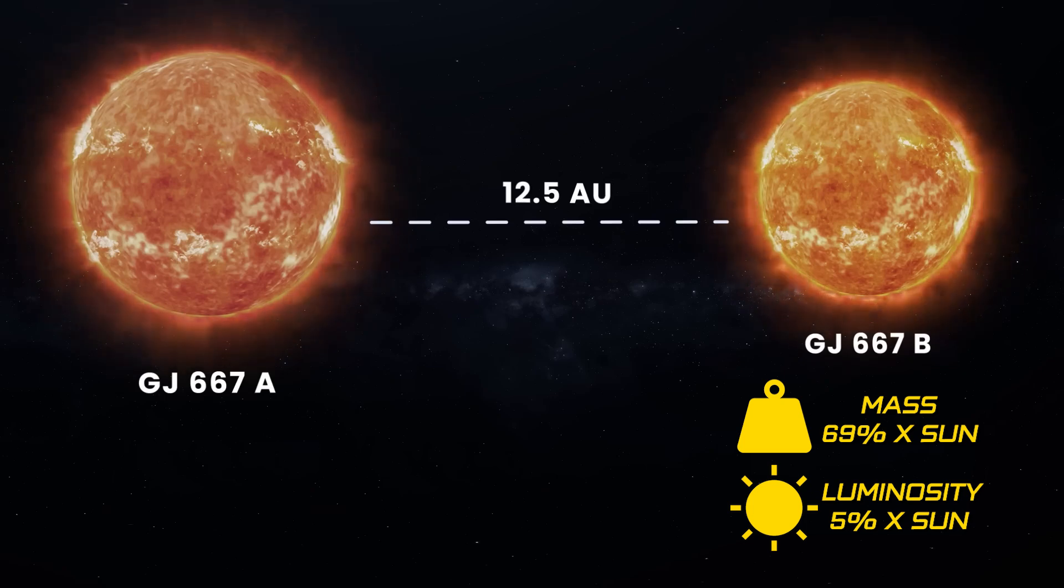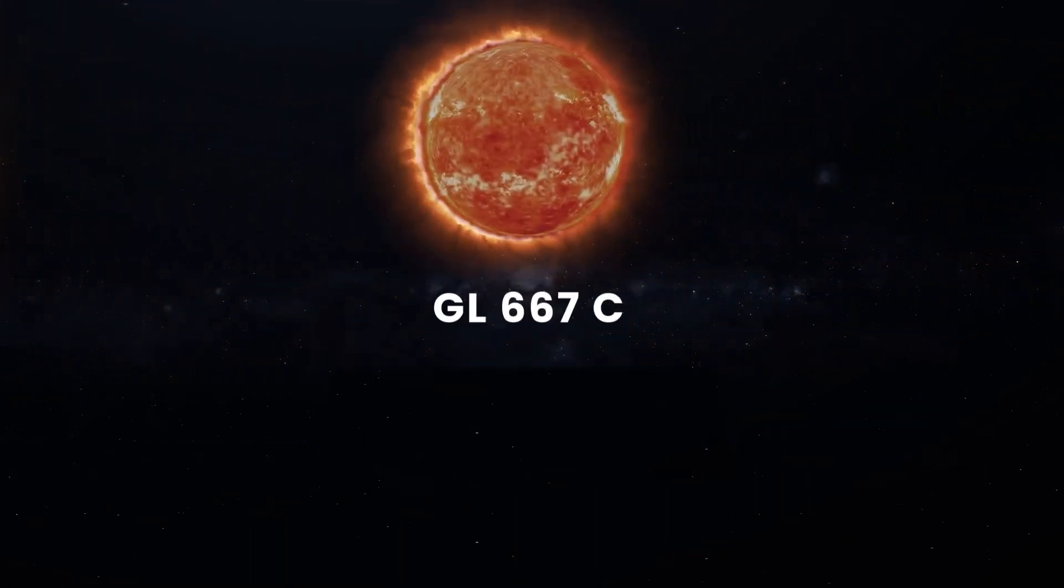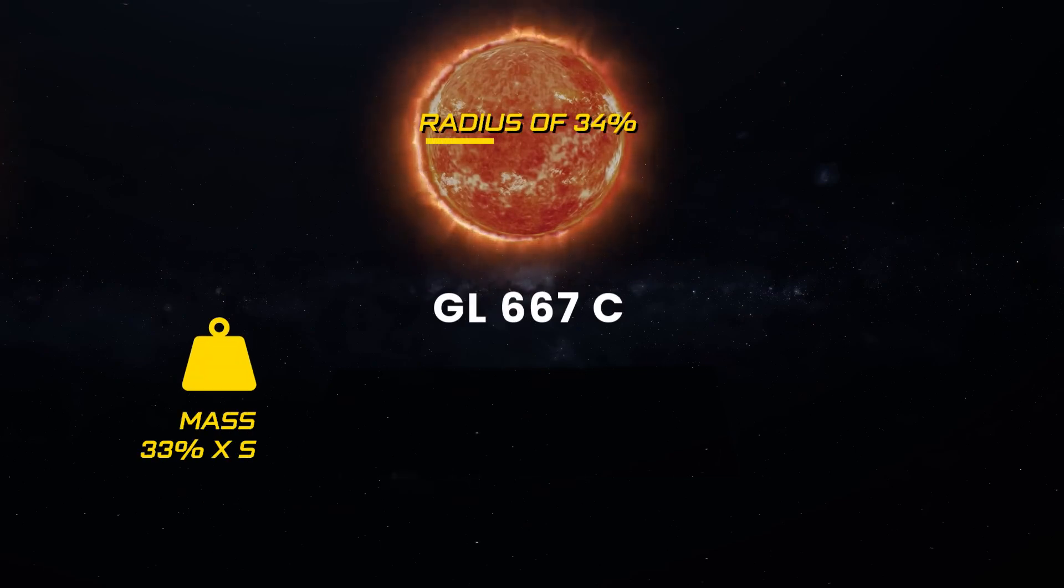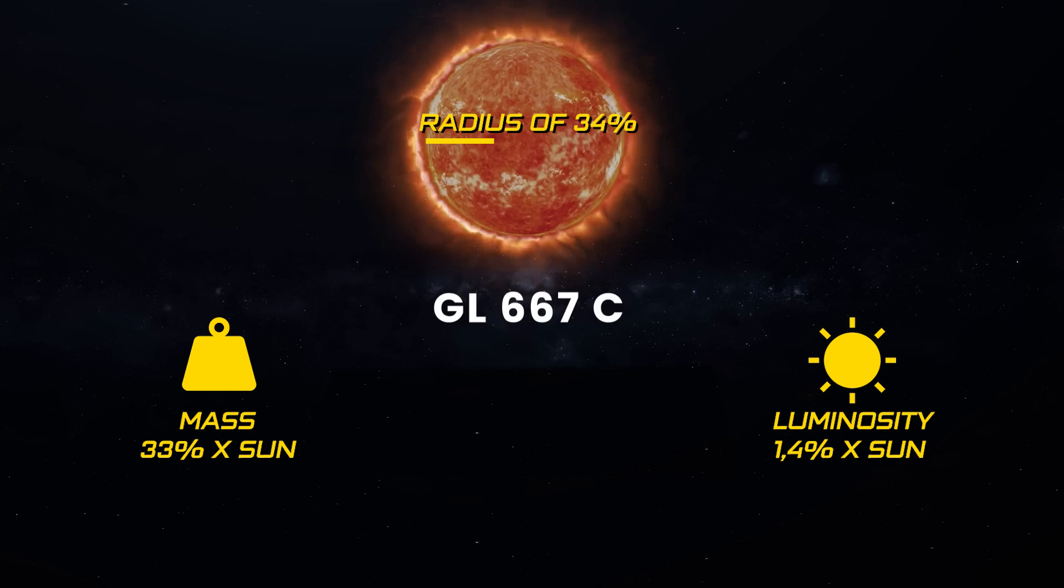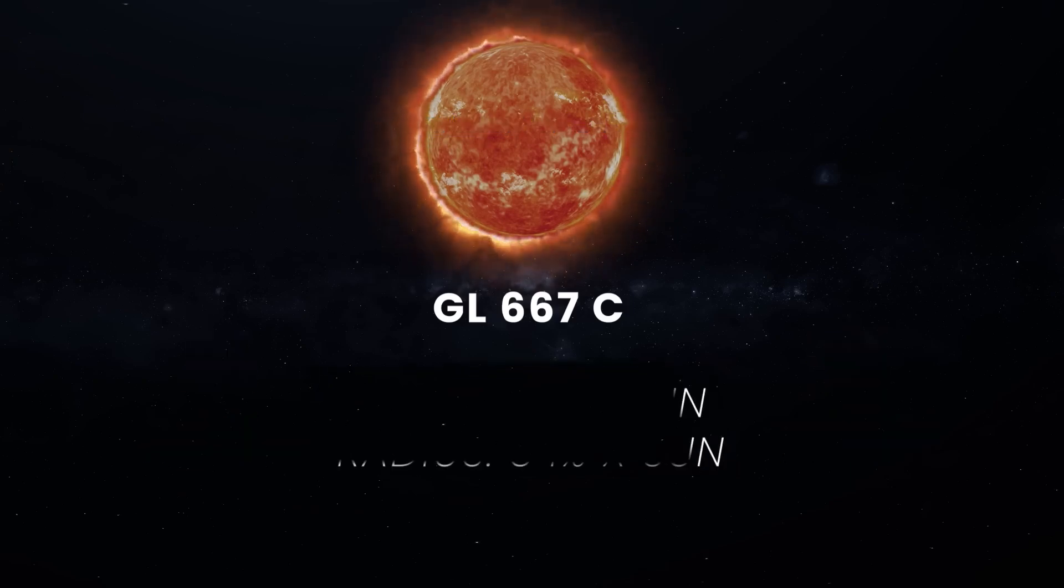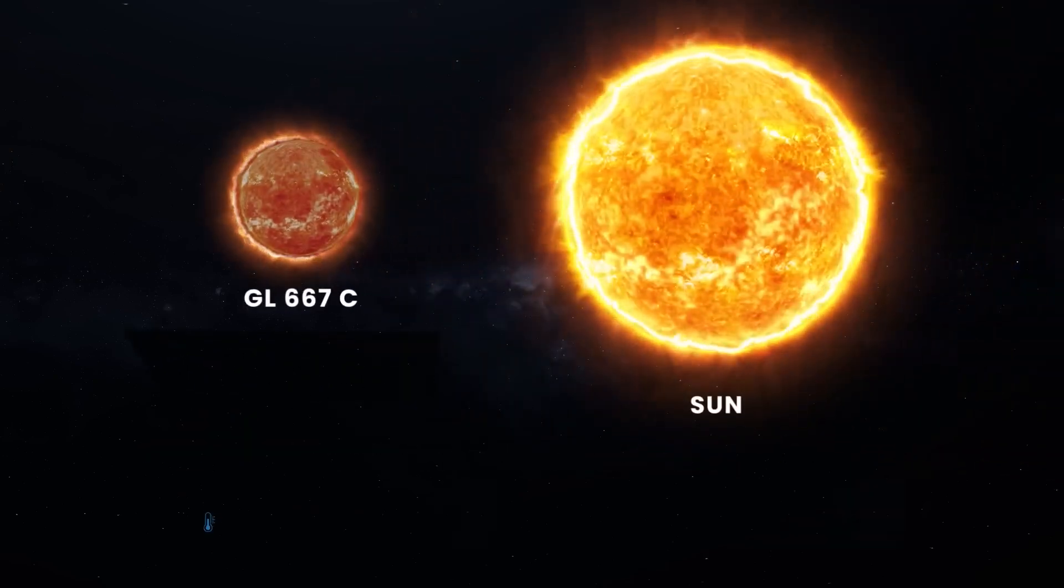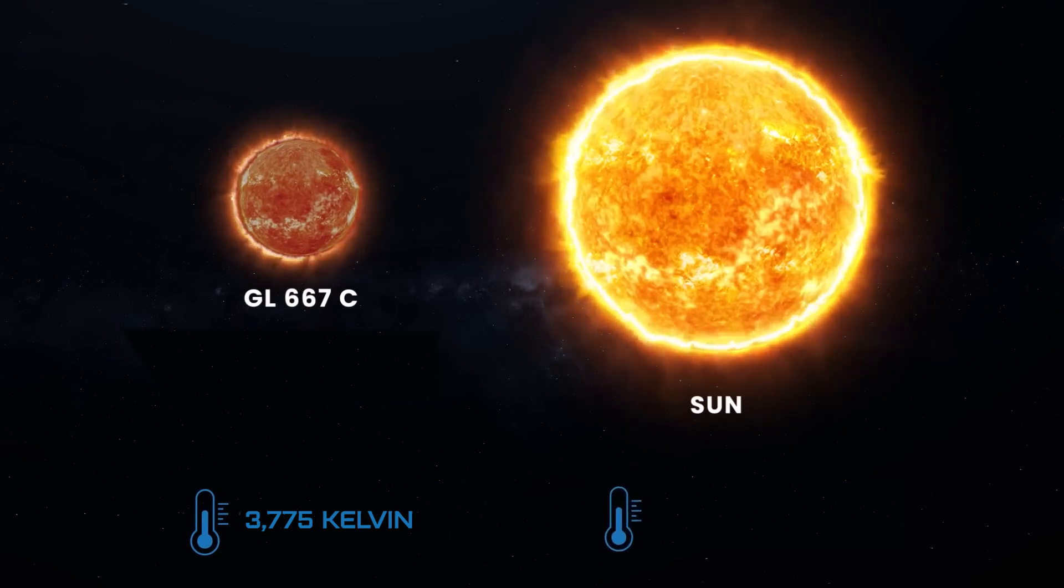Now, here's where things get intriguing. Much like the captivating third star in Alpha Centauri, Gliese 667-C emerges as an M-type red dwarf, boasting a mass and radius merely a third of our Sun's. Despite its diminutive stature, this star shines dimly, with a luminosity merely 1.4% of the Sun's radiance, clocking in at a relatively frosty 3,775 Kelvin. It's considerably cooler compared to our Sun's toasty 5,772 Kelvin surface temperature.